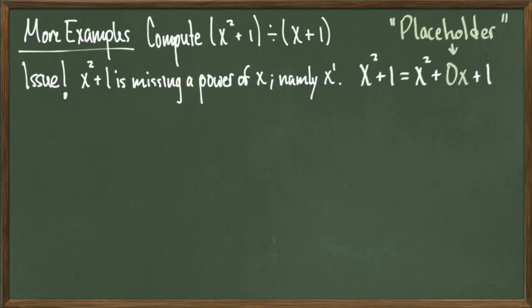0x is called a placeholder. Basically, any time that we have a missing power of x, we write that power of x and attach a 0 to it. Once we've done this, we can start dividing. So let's go ahead and set up our division bar. We have a polynomial inside with the placeholder and our divisor outside.